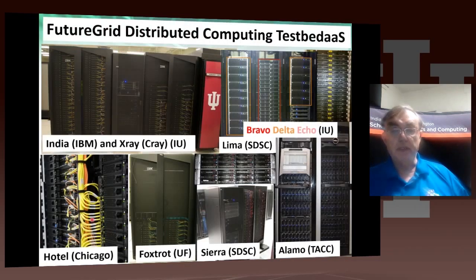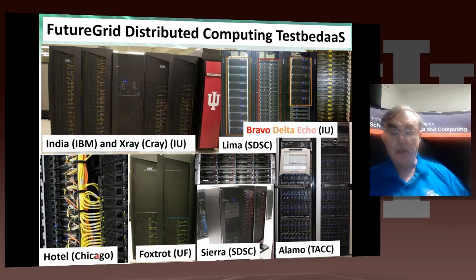Here's what the systems look like — they're scattered around the country. Some are in Indiana, some in San Diego. There's one cluster in Chicago, one in Florida, and one at the Texas Advanced Computing Center. I thank you for your interest in FutureGrid, and please go through the other MOOCs to get more detail. Thank you very much.